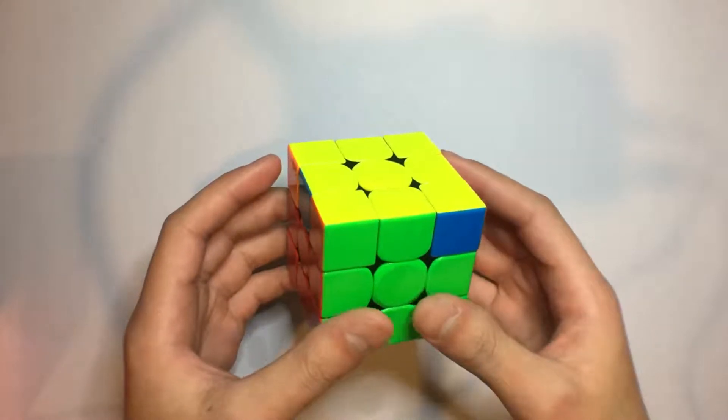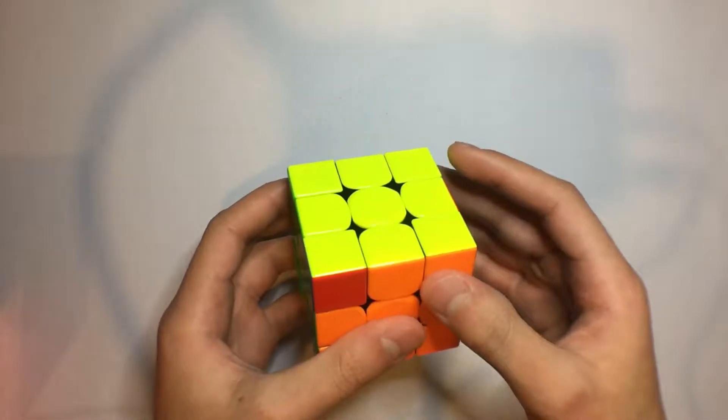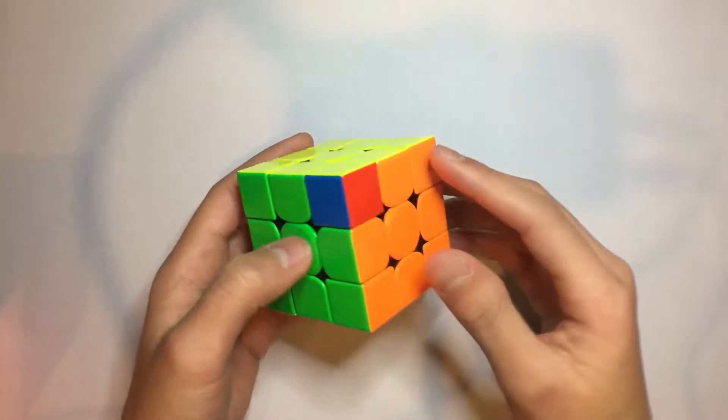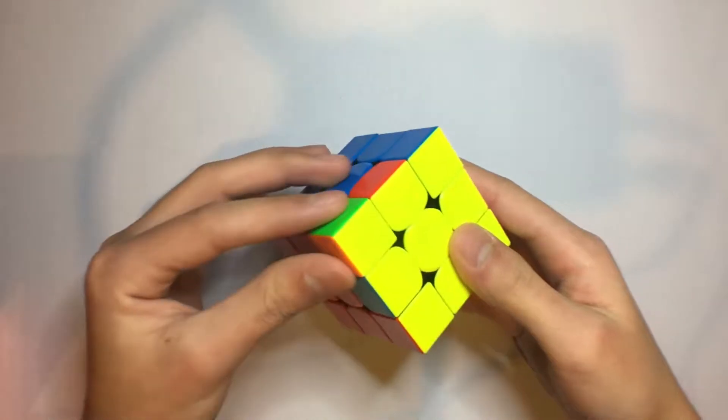The way I recognize this algorithm is by the 1x2 bar in the front left as well as the 1x2 bar on the right side. Another thing about this case is that this corner is all alone and nothing back here is solved.